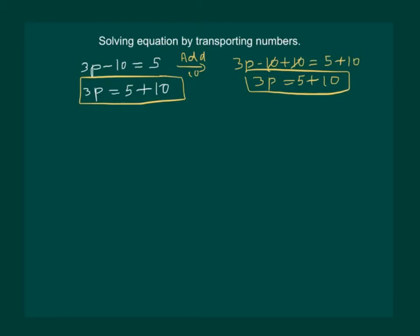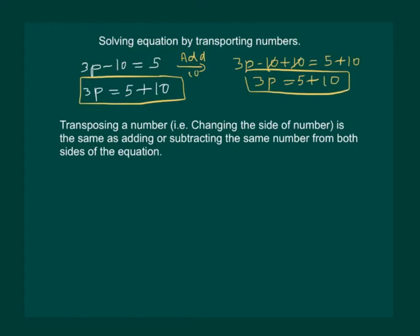So we are introducing transportation of the number by changing the sign, which is the same as adding or subtracting on both sides of the equation. Here we understand two things. Firstly, that changing the sign of the number is also called transposing a number. So transposing a number is the same as adding or subtracting the same number from both sides of the equation.